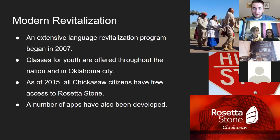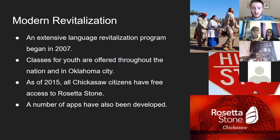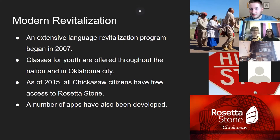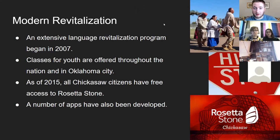However, there are modern revitalization efforts. In 2007, an extensive language revitalization program was started to increase the number of Chickasaw speakers, because right now there are fewer than 100 fluent speakers. The nation offers classes for youth throughout the borders of the nation, as well as in Oklahoma City. As of 2015, all Chickasaw citizens have free access to Rosetta Stone in the Chickasaw program, and a number of apps have also been developed. Signs including stop signs and other road signs have the Chickasaw language printed on them, which is a great way to get people aware of the language.